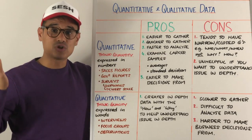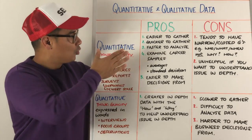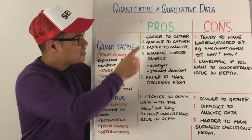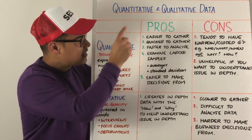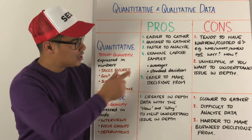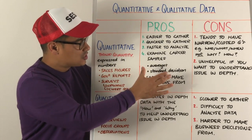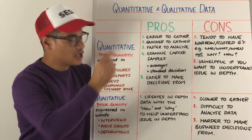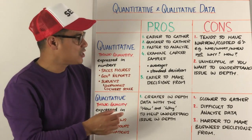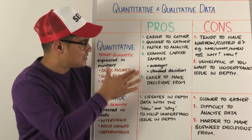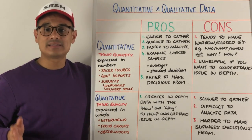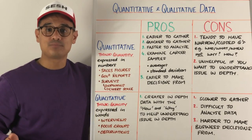The pros of quantitative data: it's easier and quicker to gather, it's faster to analyze, and you can examine larger samples. You can also do statistical analysis — averages, standard deviation — because it's in numbers. And the key thing is it's easier to make decisions from.